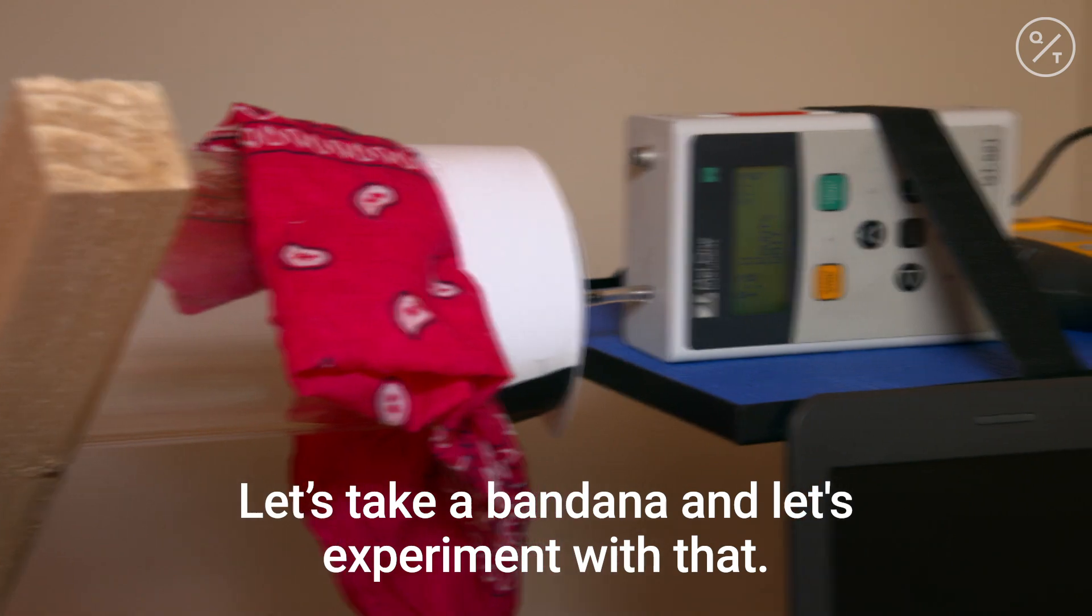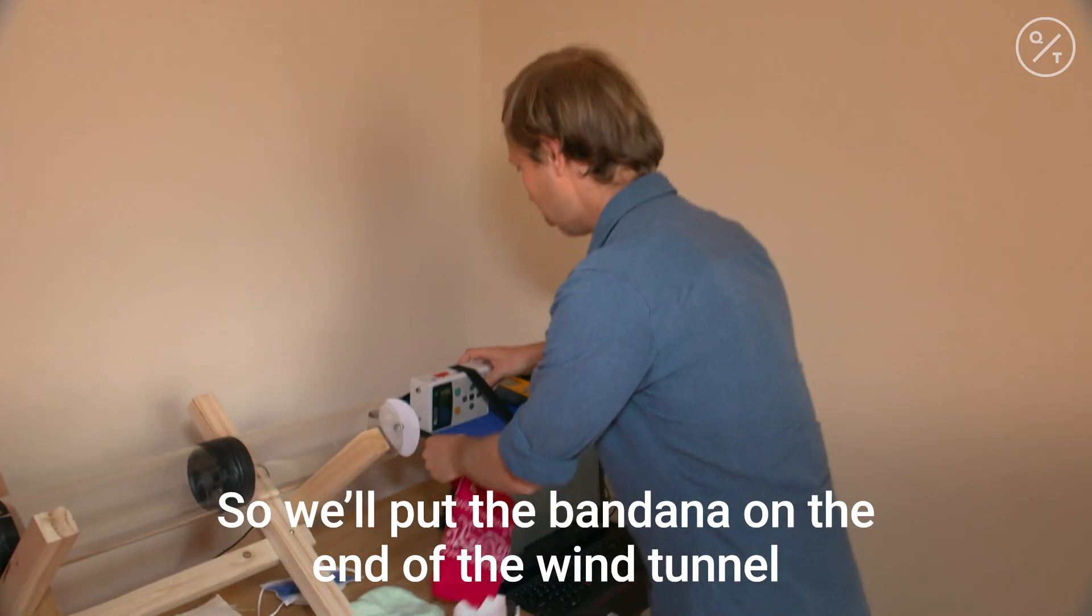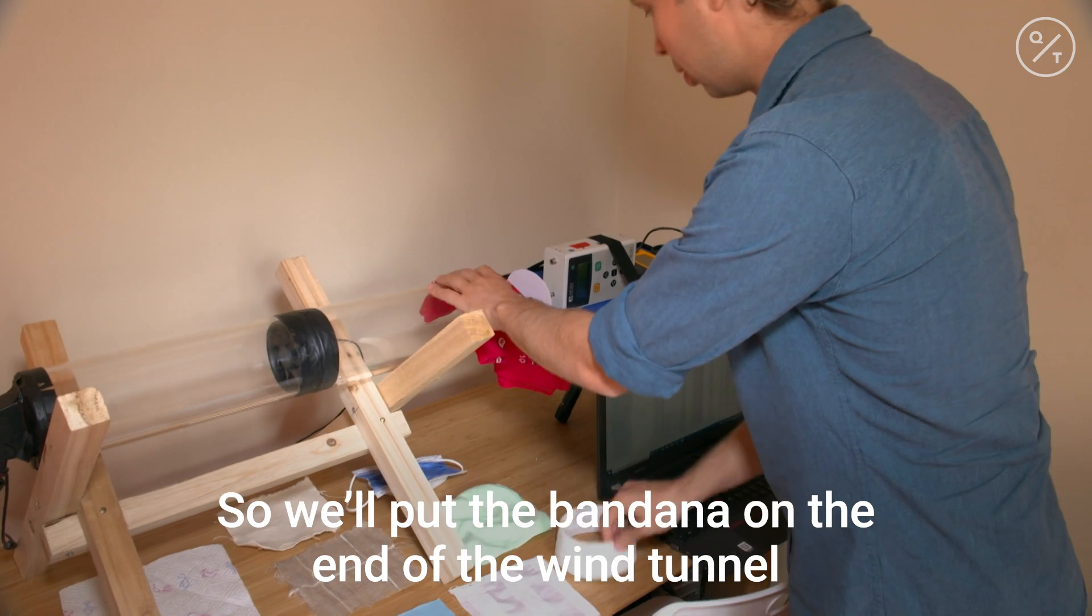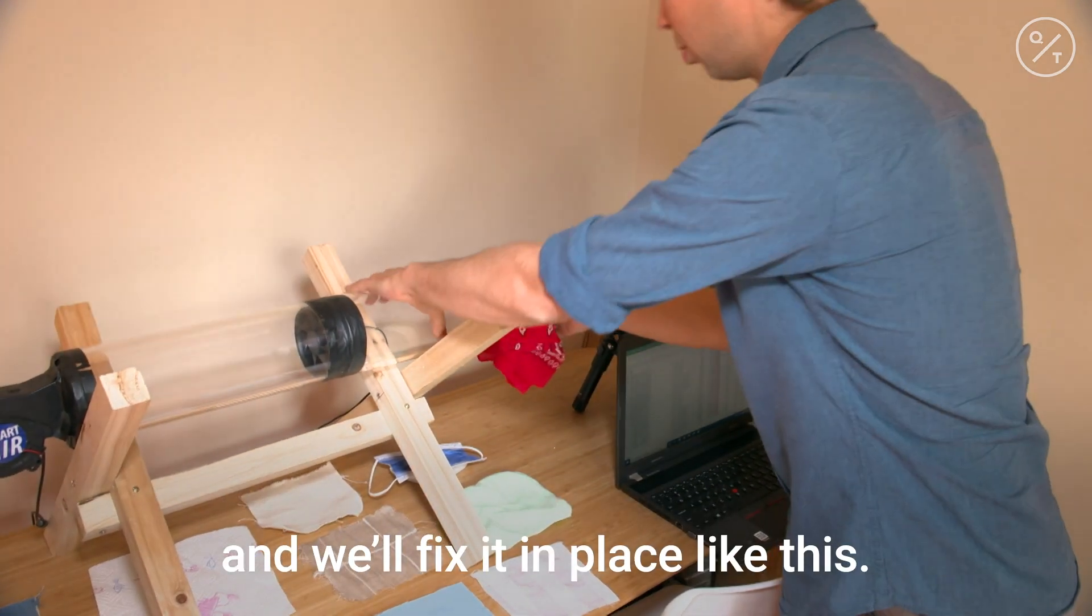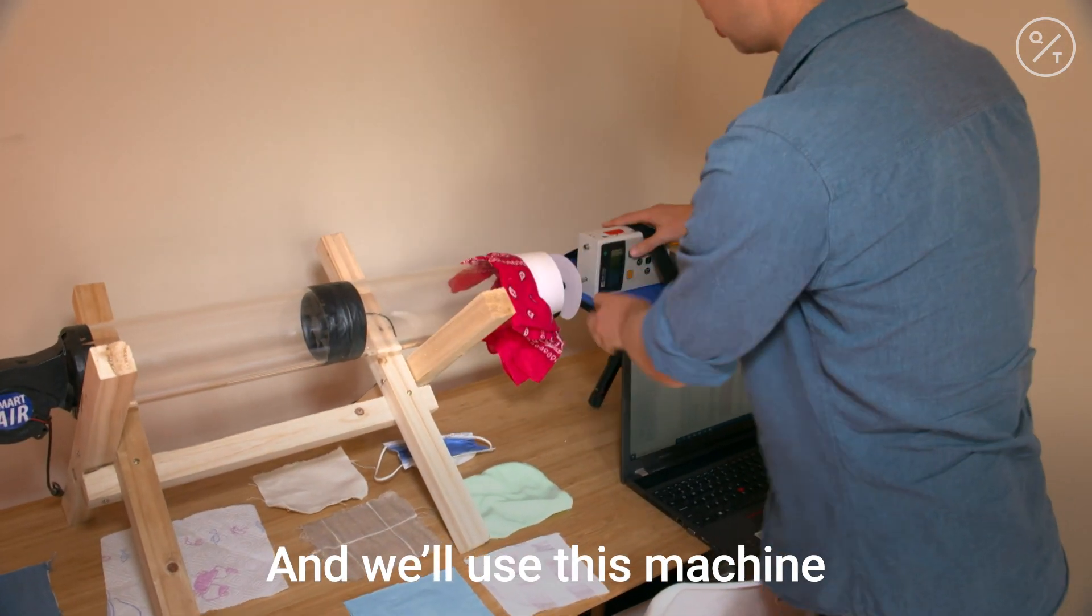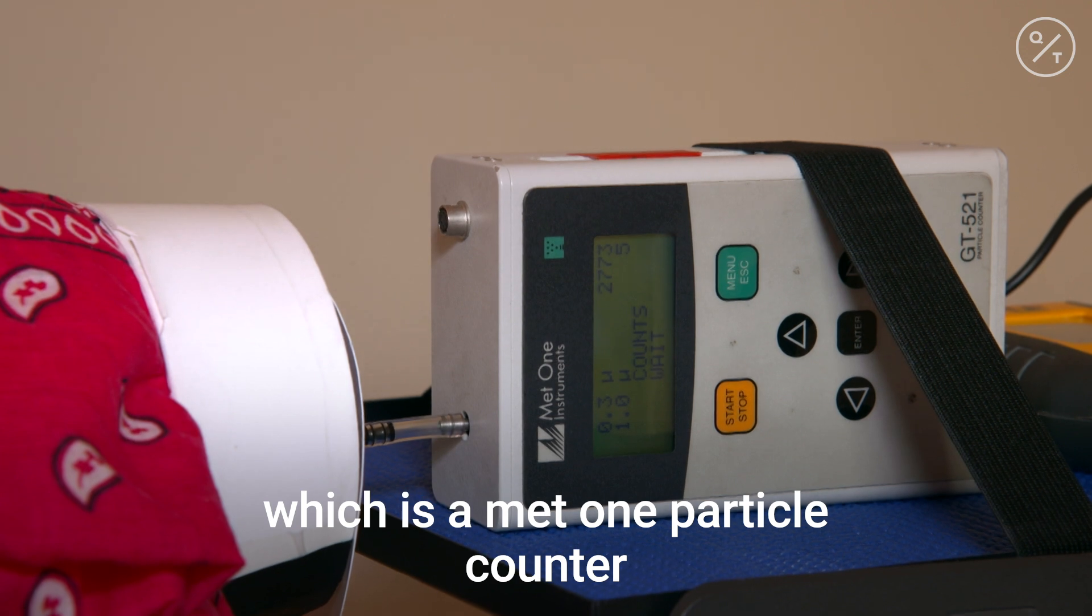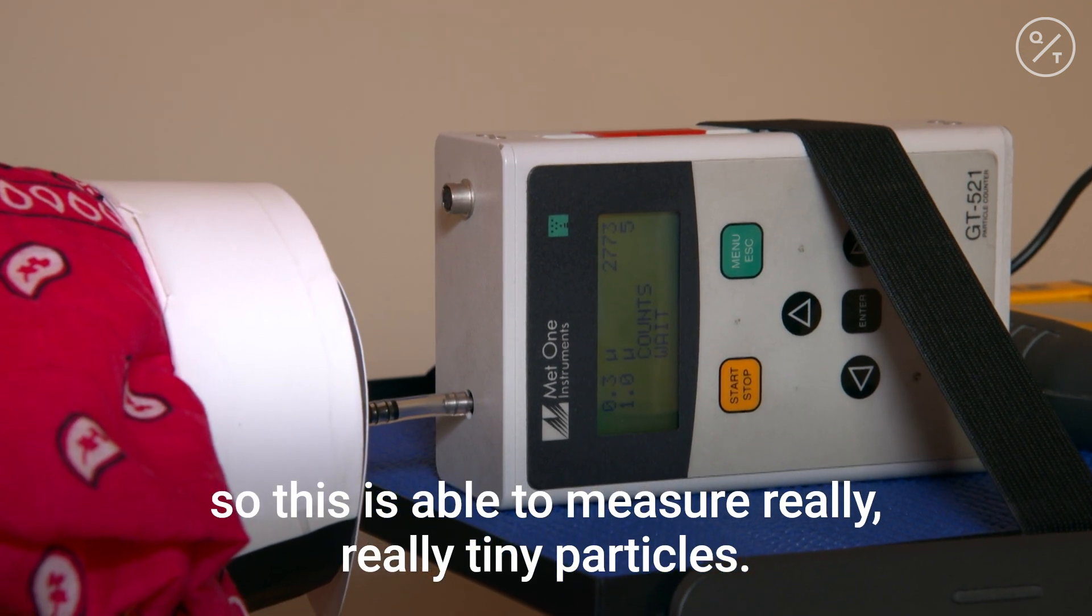Let's take a bandana and experiment with that. So we'll put the bandana on the end of the wind tunnel and we'll fix it in place like this. And we'll use this machine, which is a MET 1 particle counter. So this is able to measure really tiny particles.